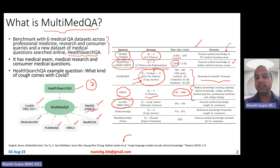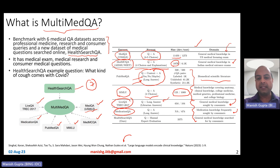LiveQA is essentially a dataset about consumer knowledge, with a question plus long answer format. MedicationQA is about medication knowledge frequently sought by consumers — again, these are all consumer-based questions. And HealthSearchQA is a new dataset that they contribute in this work.